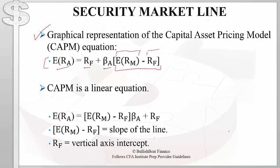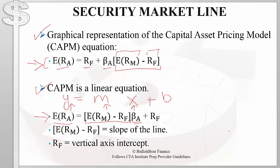which is equal to the difference between the expected return on the market and the risk-free rate. The CAPM is a linear equation. We know from high school math that a linear equation is of the general form Y = MX + B. We can rearrange the CAPM equation into this form: expected return on the asset as Y, the market risk premium as M (the slope), beta as X, and the risk-free rate as B, the intercept on the Y-axis.